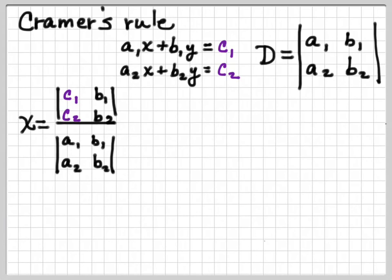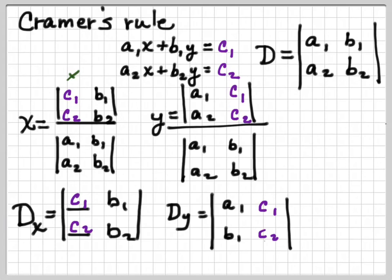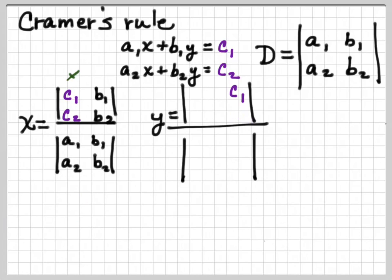Now, we know that x is going to be equal to this. I'm not going to read them all off to you, just so you can see it, but you can kind of see how the bottom and the top are the same, except in the top we've replaced the first column, which would be what is associated with x, with the answers over here.